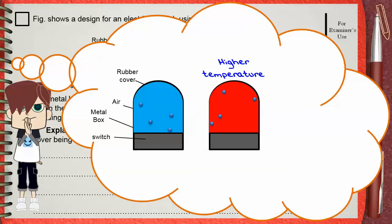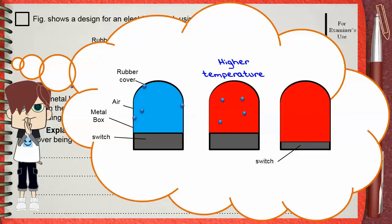This causes an increase in pressure, and finally the switch is pressed even without the rubber cover being squashed.